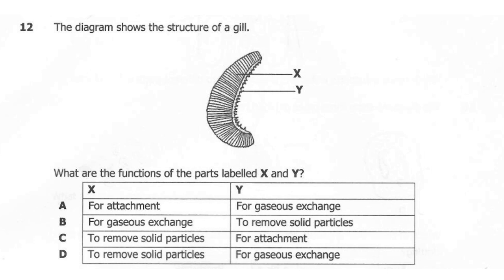The correct answer here is B. X is the gill filament and its function is to carry out gaseous exchange. Then Y is the gill raker, and the function of the gill raker is to remove solid particles. So that's why the correct answer here is B.